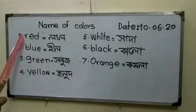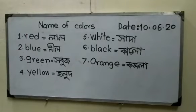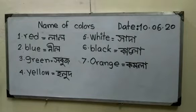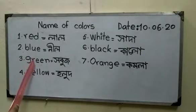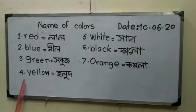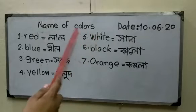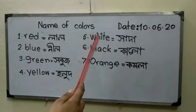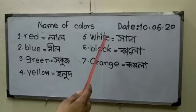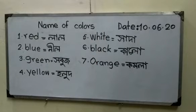Number 1 - Red. Red means Lal. Number 2 - Blue. B-L-U-E. Blue means Neel. Number 3 - Green. G-R-E-E-N. Green means Shobuj. Number 4 - Yellow. Y-E-L-L-O-W. Yellow means Holud. Number 5 - White. W-H-I-T-E. White means Shada.